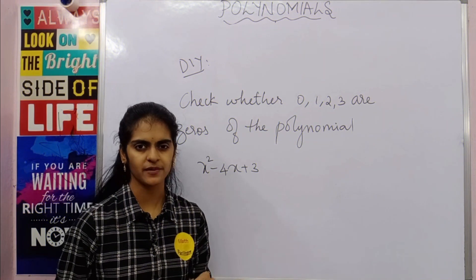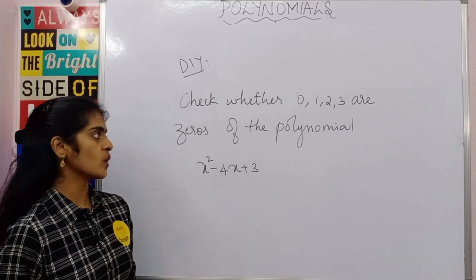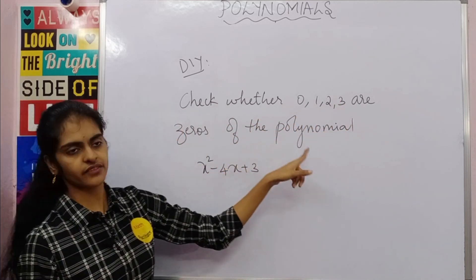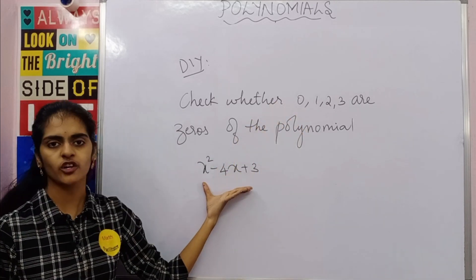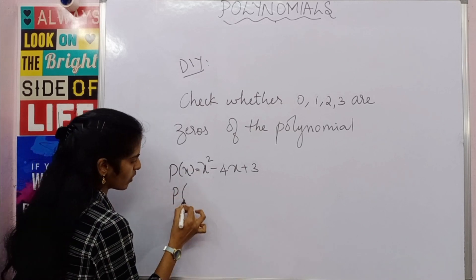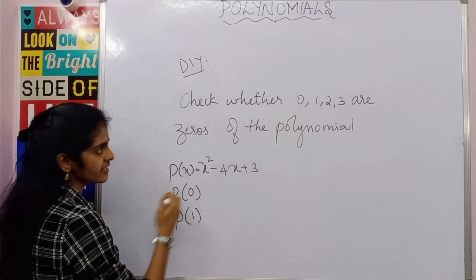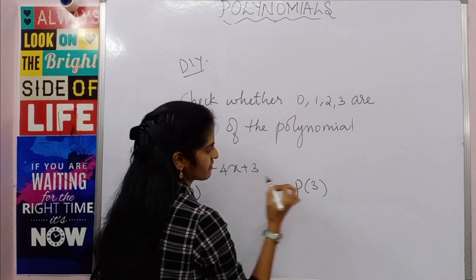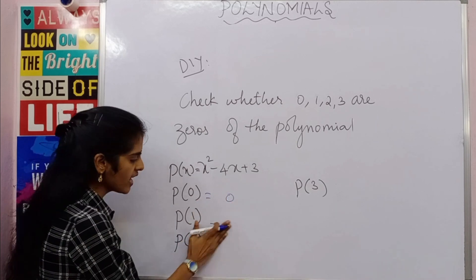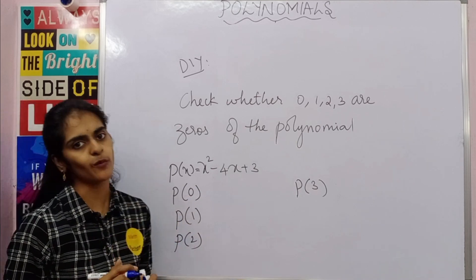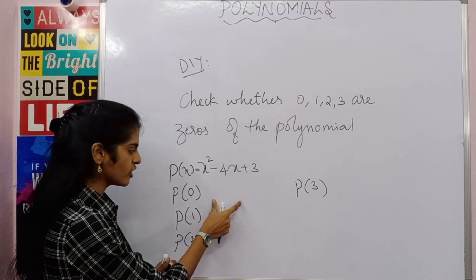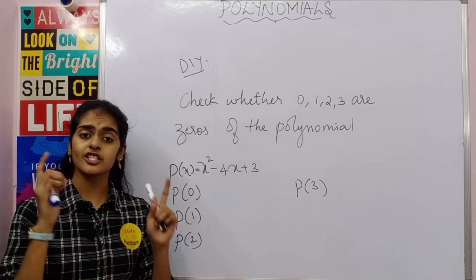The introduction of this chapter is now complete. Your first exercise: check whether 0, 1, 2, and 3 are zeros of the polynomial. Substitute each value in place of x; if the result is 0, that value is a zero of the polynomial. Do it yourself and check your understanding.